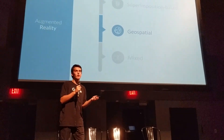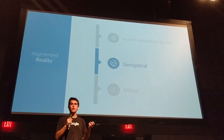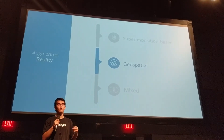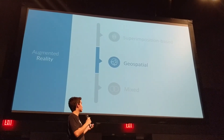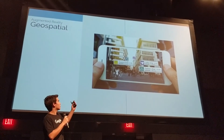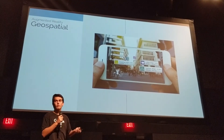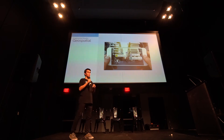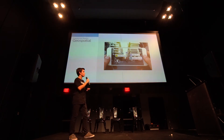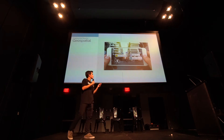Geospatial AR is pretty self-explanatory — it changes what you're seeing based on your geographical location. For example, if you're walking around downtown in a place you haven't been before and want to find a coffee shop, you just point the camera around and you can see there's a coffee shop right there. Another example is Pokemon Go, a pretty explosive mobile game that used geospatial AR to create different models within the world based on where you were.